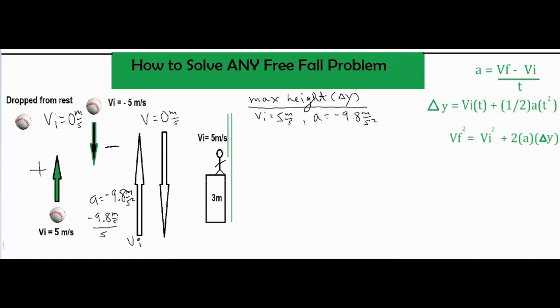We know that the starting velocity is five meters per second. We always know that the acceleration is negative 9.8 meters per second squared. Because we already have two out of the three variables, and at its maximum height at the peak it will have a final velocity of zero, we can say that vf equals zero meters per second.